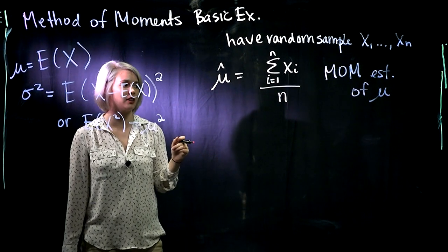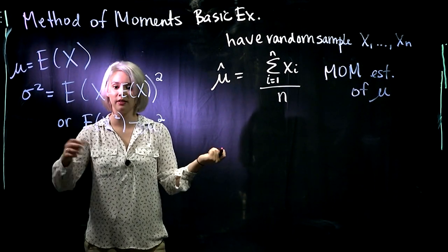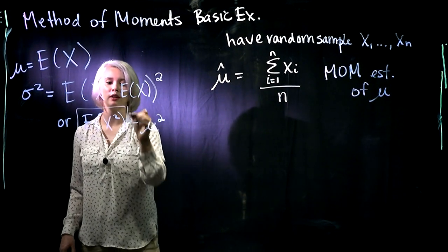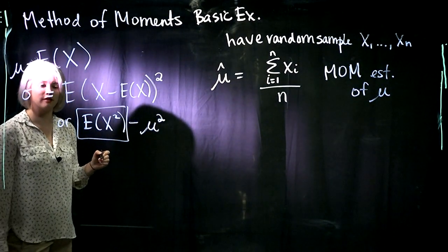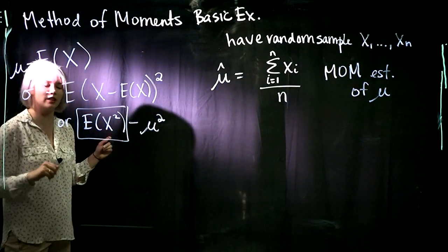So we have our method of moments estimator of μ. Now let's find the method of moments estimator of expectation of X². And then we'll be set with the variance as well.